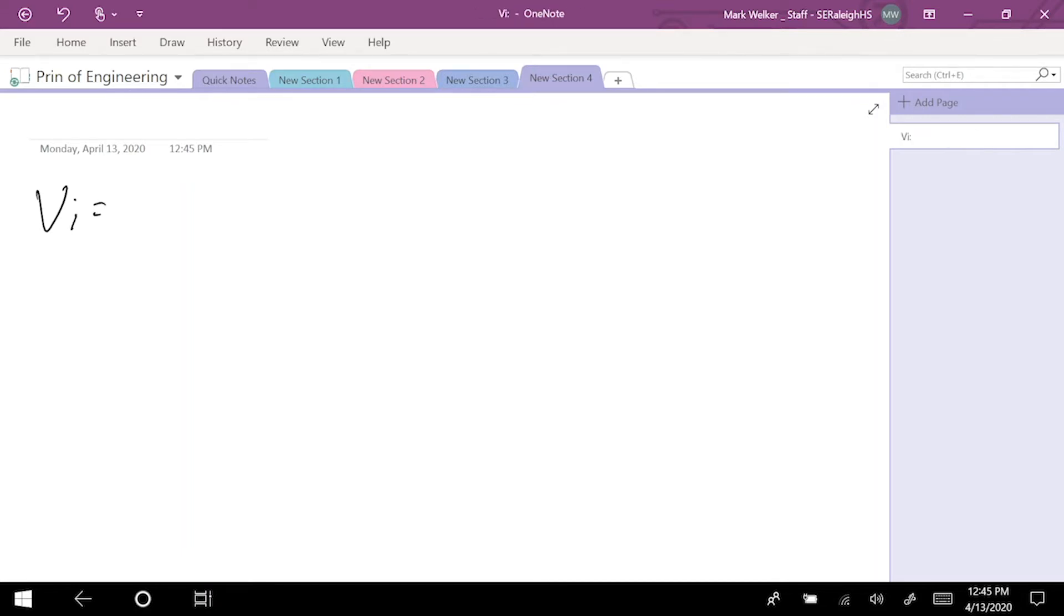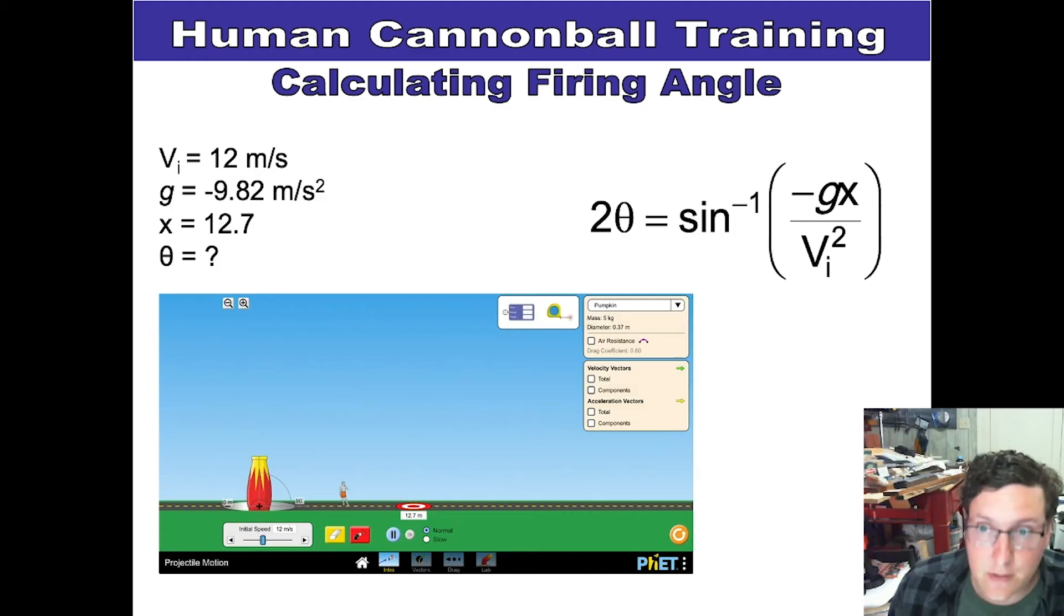So in terms of our calculations, in this case, vi equals 12 meters per second. We know that gravity is staying constant at negative 9.82 meters per second squared. We know that x equals 12.7 meters, and we know that the theta is going to be the unknown value. Now, calculation-wise, you've got to make sure you're paying attention to the formula here. That 2 times theta is an easy point of error.